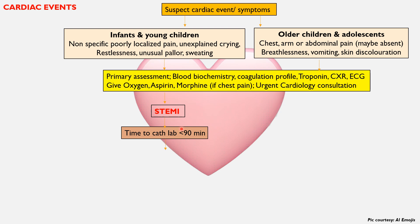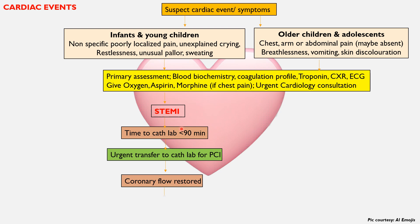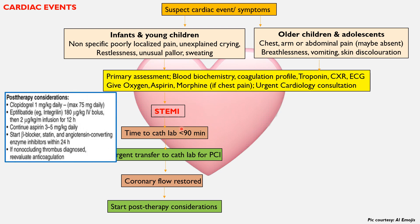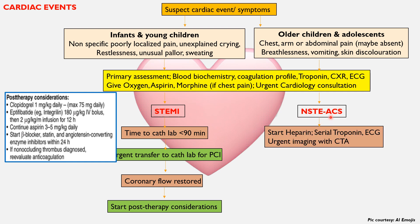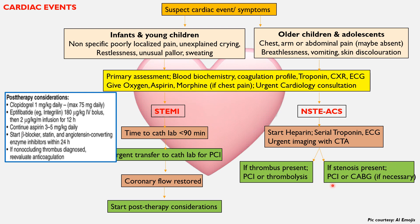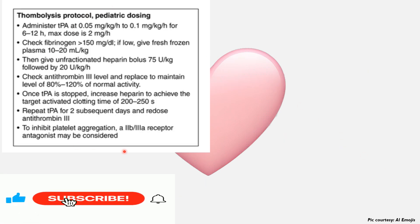If ST elevation MI is identified on ECG and time to cath lab is less than 90 minutes, immediately transfer for percutaneous intervention. If coronary flow is restored, start clopidogrel, eptifibatide, aspirin, beta blocker, statin, and ACE inhibitor within 24 hours. For non-occlusive thrombosis, reevaluate anticoagulation protocol. For NSTEMI/ACS, start heparin, do serial troponin and ECG, and urgent coronary CT angiography. If thrombosis is present, do percutaneous intervention or thrombolysis; if stenosis is present, do percutaneous intervention or coronary artery bypass graft if necessary.